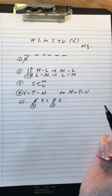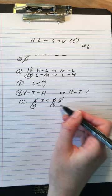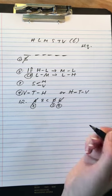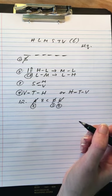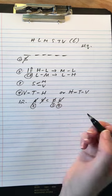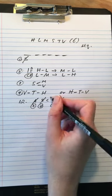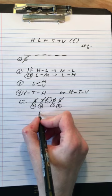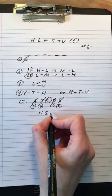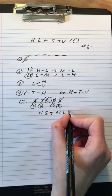S has to be before M and V, so E is out based on rule 3. T should be between V and H, so B is out based on rule 4. So C is the correct answer: H, S, T, M, L, V.